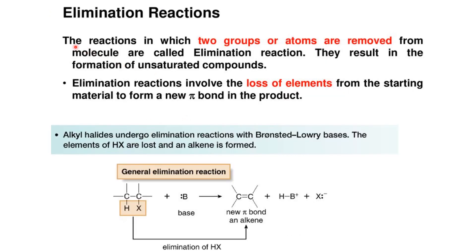Elimination reactions are E1 and E2. In elimination, H and X are removed, a new double bond (pi bond) forms, and an alkene is produced. Elimination reactions generally require a base — strong Brønsted-Lowry bases are mostly used.